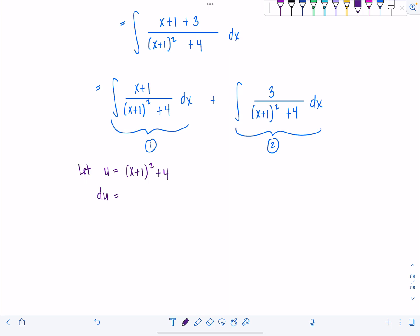And then du, differentiate the right-hand side. Use the chain rule. You have 2 times x plus 1. Derivative of x plus 1 is just 1 dx. That's almost exactly what we have here. x plus 1 dx.